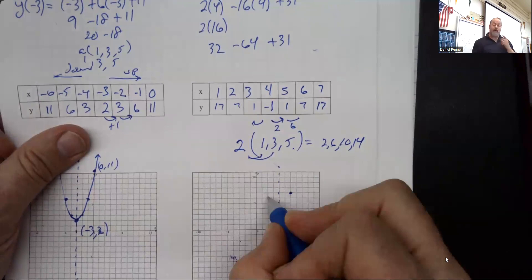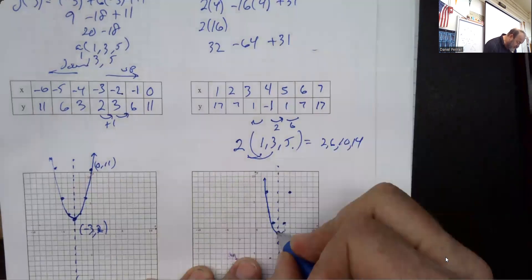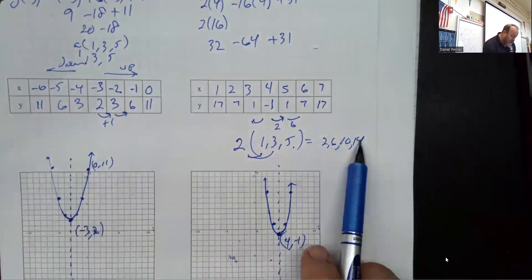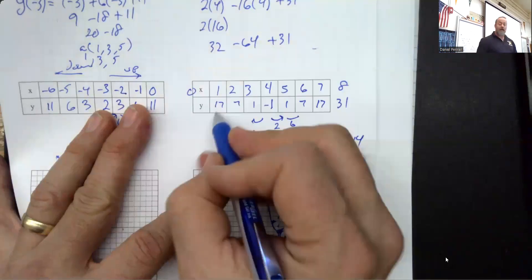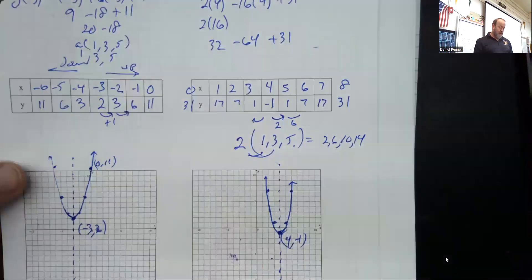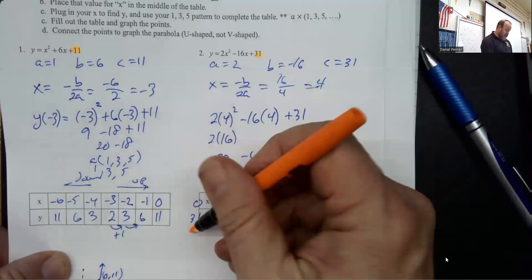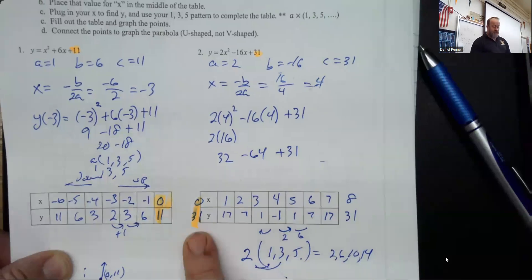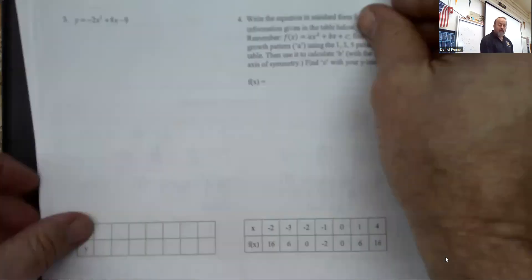The graph runs out of room, but notice it's a very steep graph because the a value is bigger than 1. If we went up one more step by 14, we'd hit 31 — and that validates our work because we said the y-intercept is where x equals 0, and 0 gave us 31 here and 11 in the first problem. That confirms our math is correct. Now we'll do the third and final review problem.